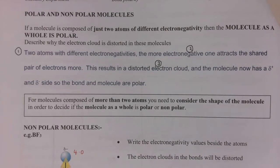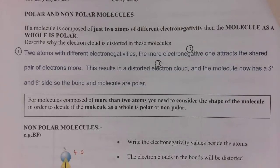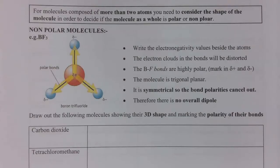For molecules where you've got more than two atoms, you do need to consider the shape of the molecule in order to be able to decide whether the molecule as a whole is polar or non-polar. It's quite possible to have a bond which is polar but a molecule which is non-polar. This is where the shape of the molecule really comes into play and why we have to study bond polarity after we've studied shape.